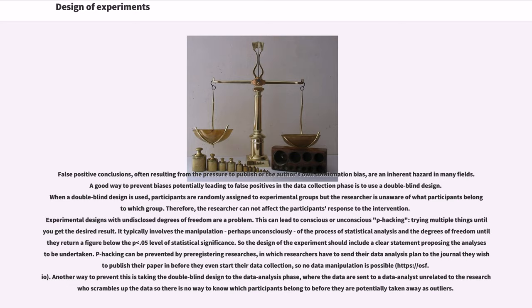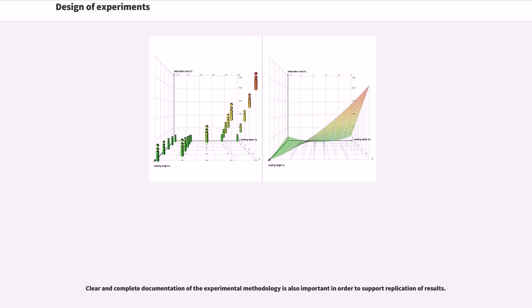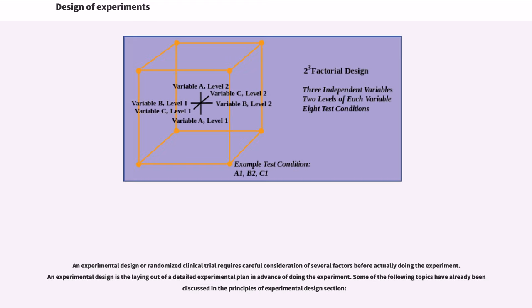Another way to prevent this is taking the double-blind design to the data analysis phase, where the data are sent to a data analyst unrelated to the research who scrambles up the data so there is no way to know which participants belong to before they are potentially taken away as outliers. Clear and complete documentation of the experimental methodology is also important in order to support replication of results. An experimental design or randomized clinical trial requires careful consideration of several factors before actually doing the experiment. An experimental design is the laying out of a detailed experimental plan in advance of doing the experiment.